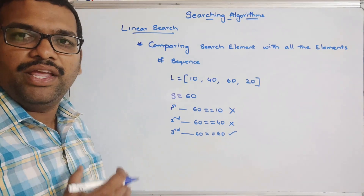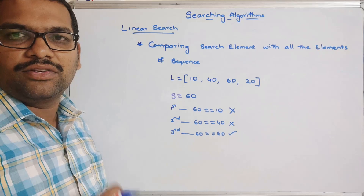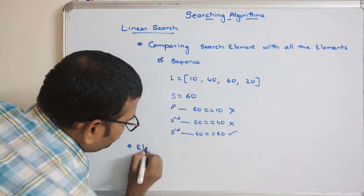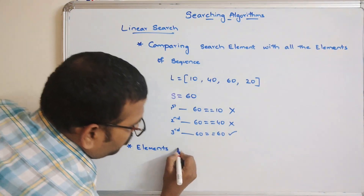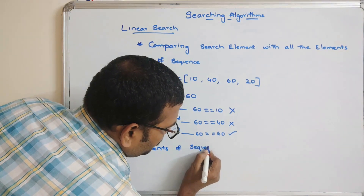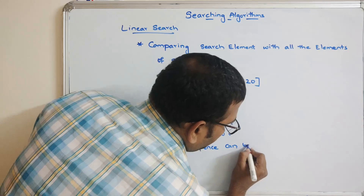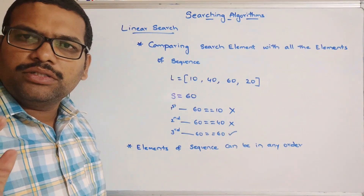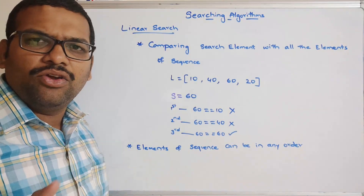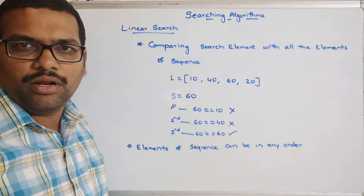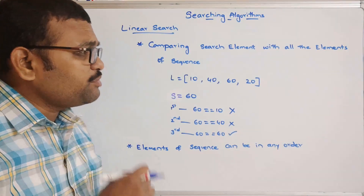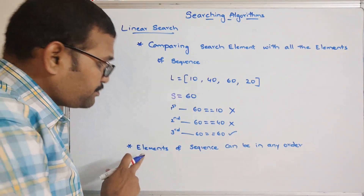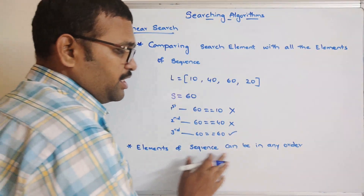This is how linear search works — comparing the search element with each and every element one by one. One important thing to remember: the elements of a sequence can be in any order. We are not bothering about ascending order, descending order, or any sorting order. We are simply comparing the search element with each element, so in linear search the elements of the sequence can be in any order.